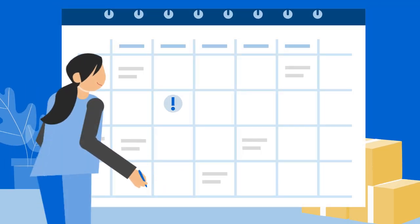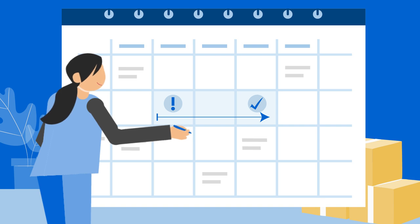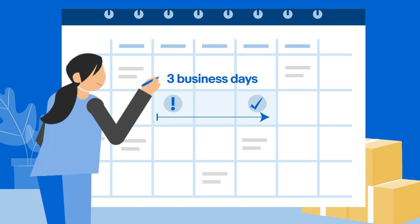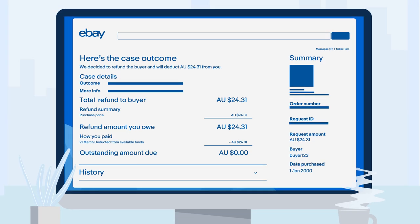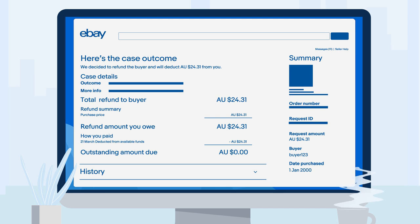For both item not received requests and return requests, do your best to work with the buyer to provide a resolution within three business days. If the issue remains unresolved after three days, eBay may step in to help. A request will only be marked as a case closed without seller resolution if eBay determines that the seller could have offered a suitable solution within the three days.